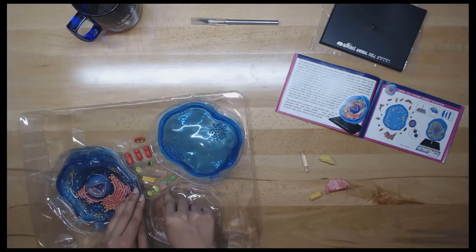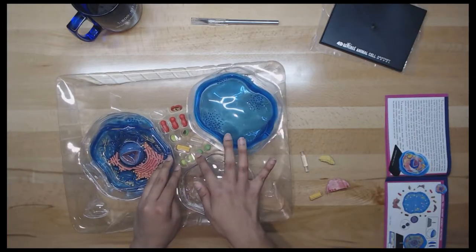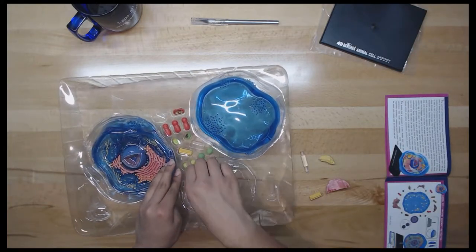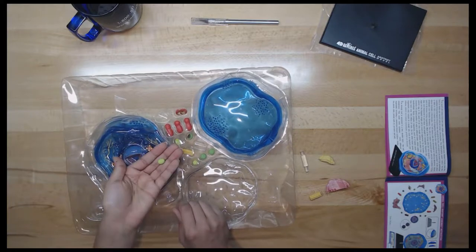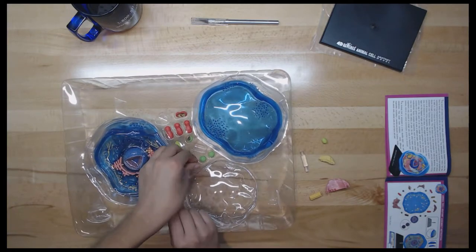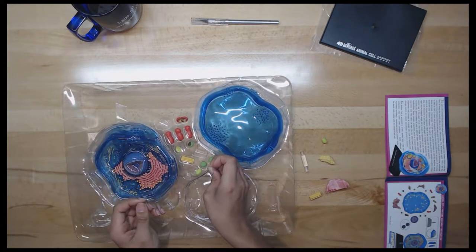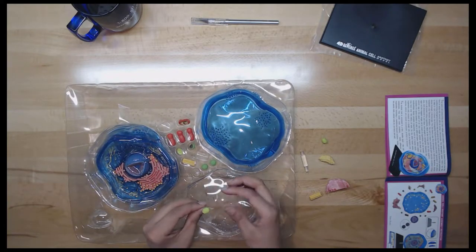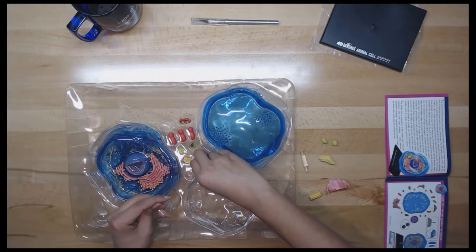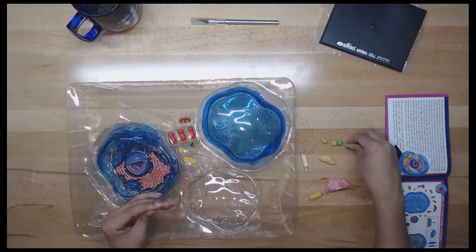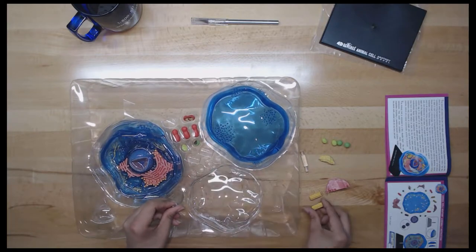First up is the nucleus. The nucleus is the most obvious organelle in most of eukaryotic cells, which is enclosed in a double membrane and consists of most of the cell's genetic material, organized as multiple long linear DNA molecules in a complex and large variety of proteins, such as histones, to form chromosomes.